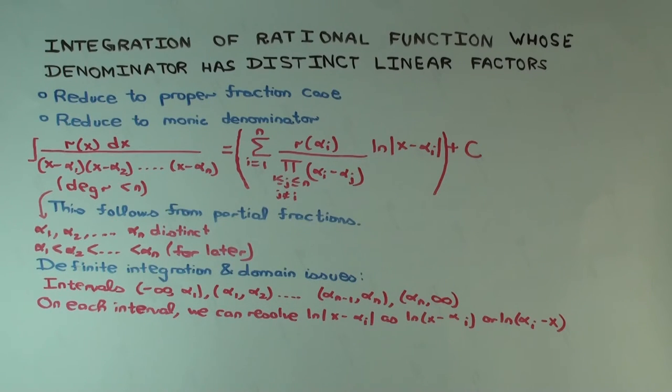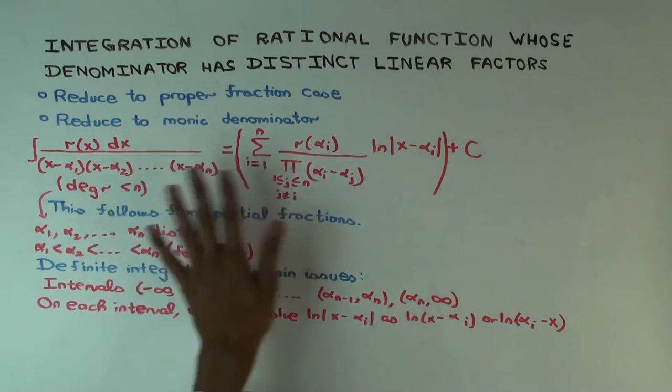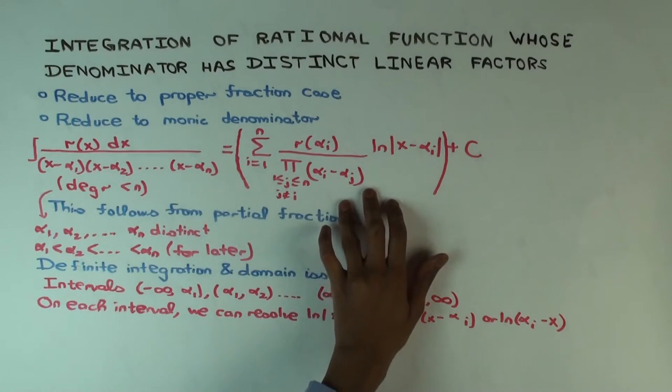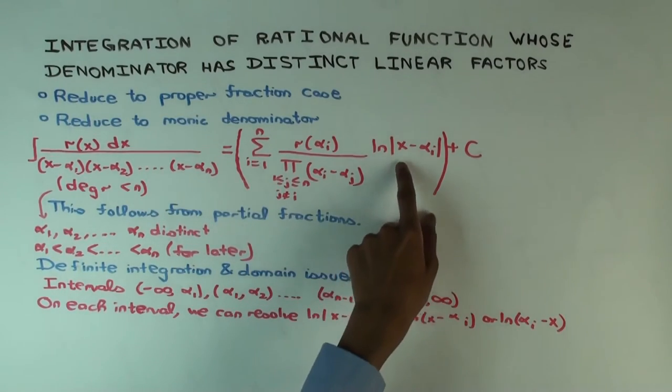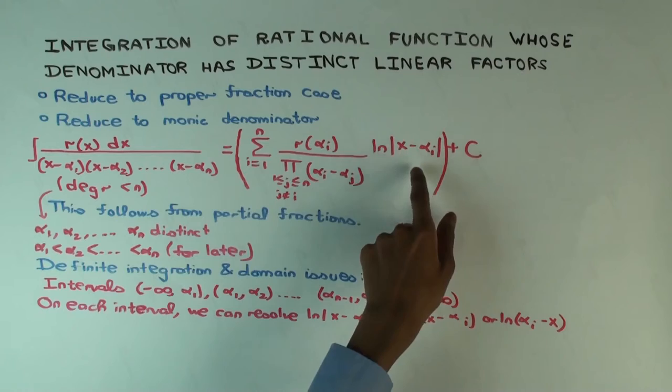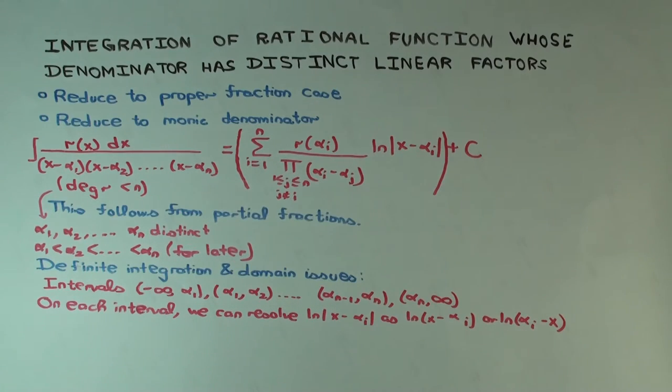What I'm saying is that on each interval, you can write this, but you can further simplify it because on each interval, you know what the sign of (x - α_i) is for every i.